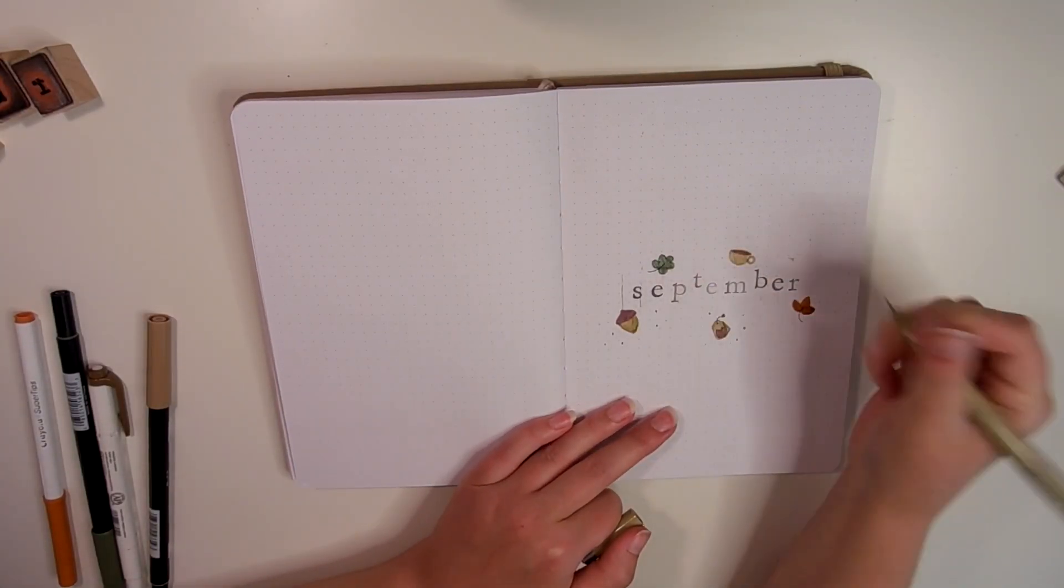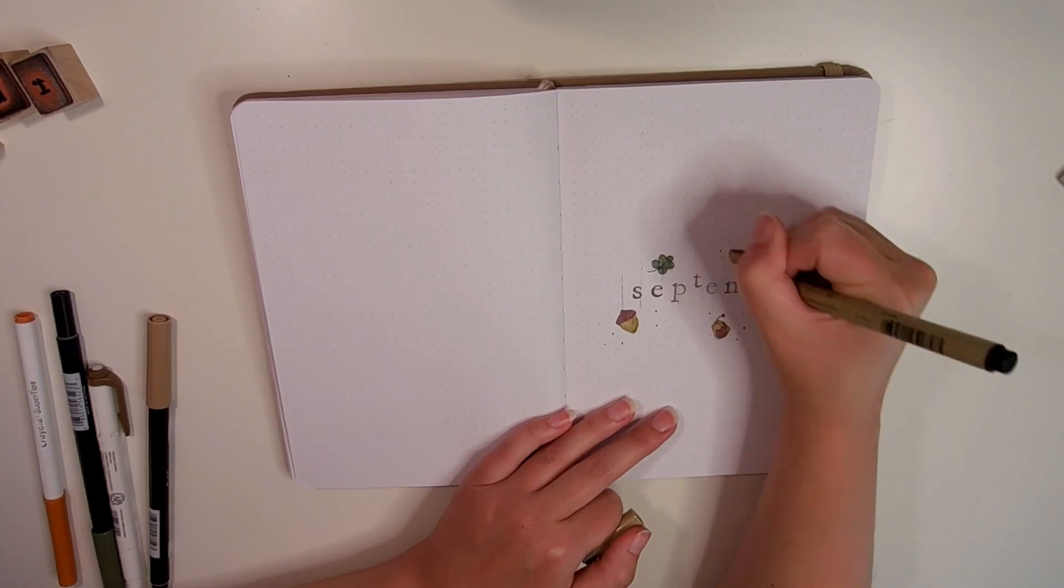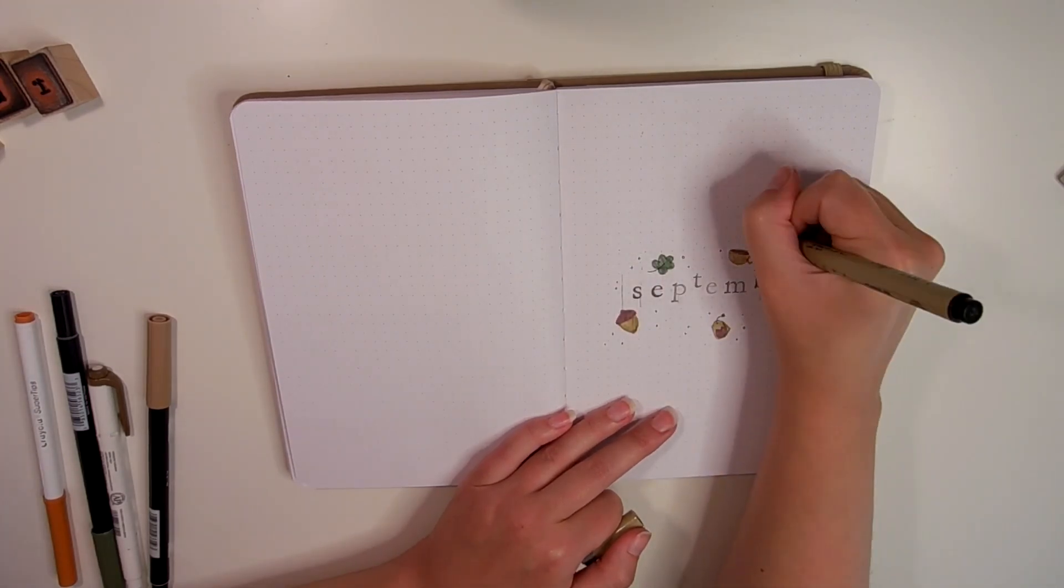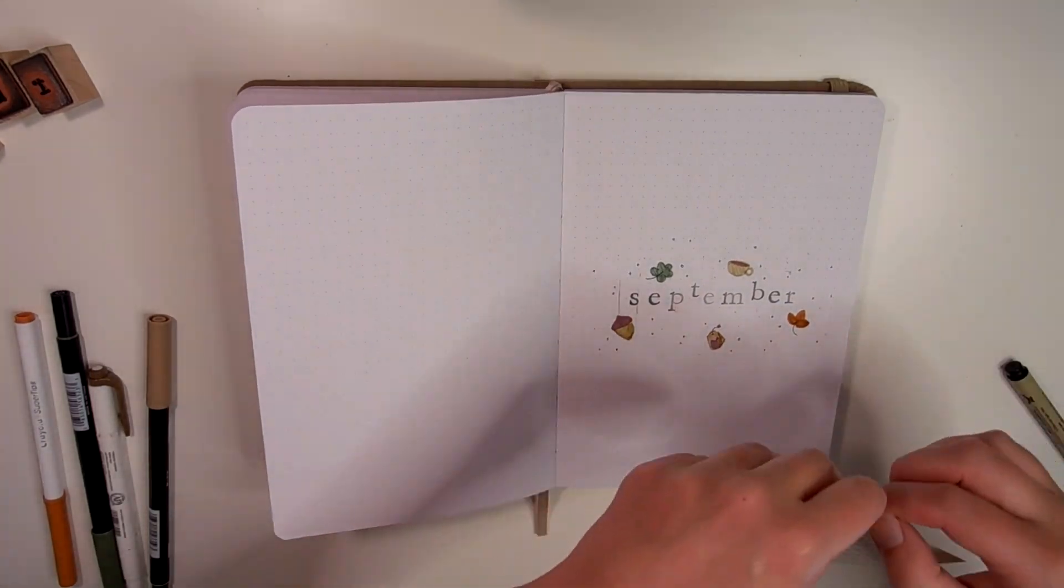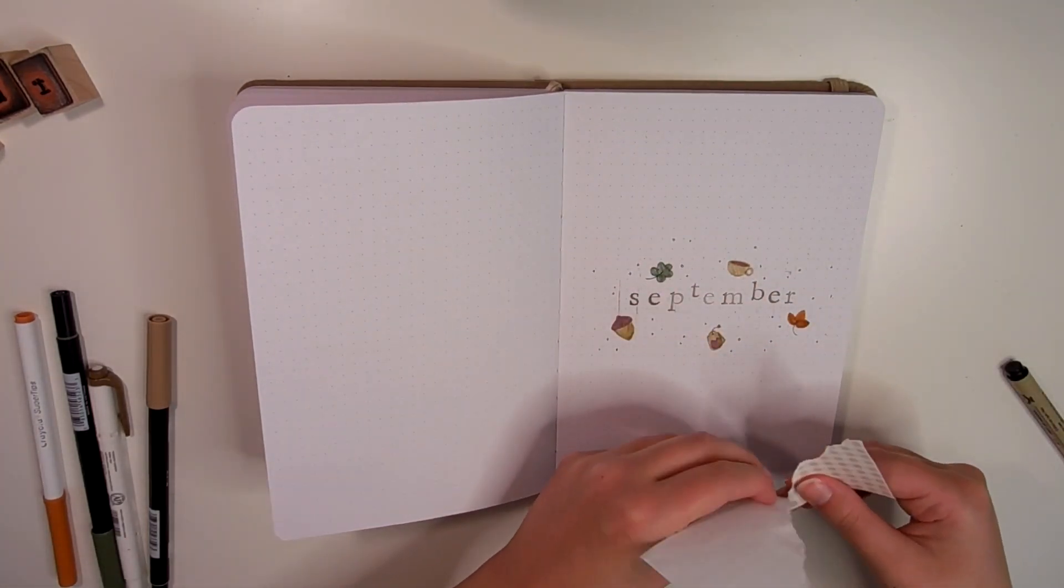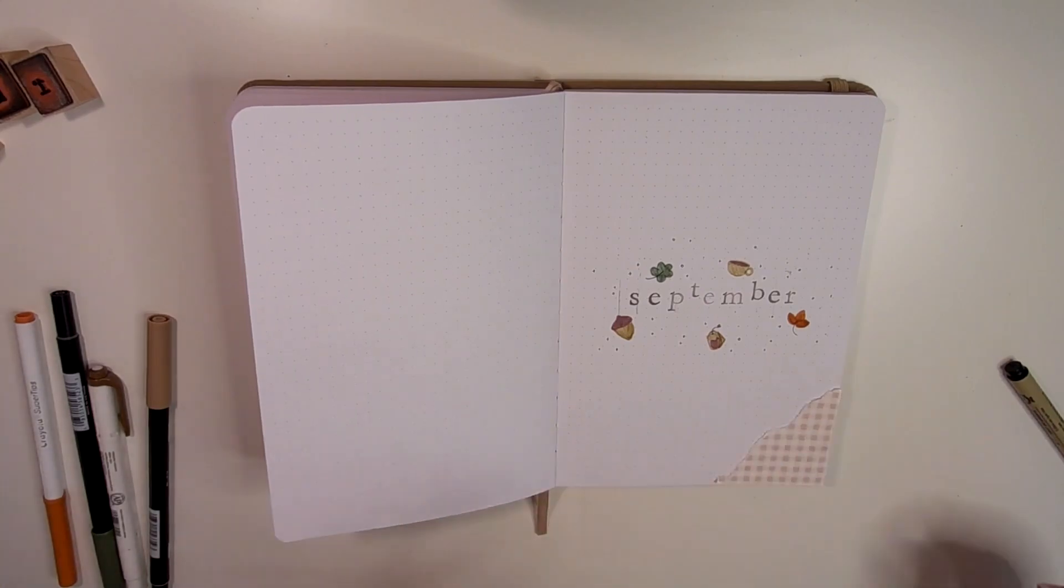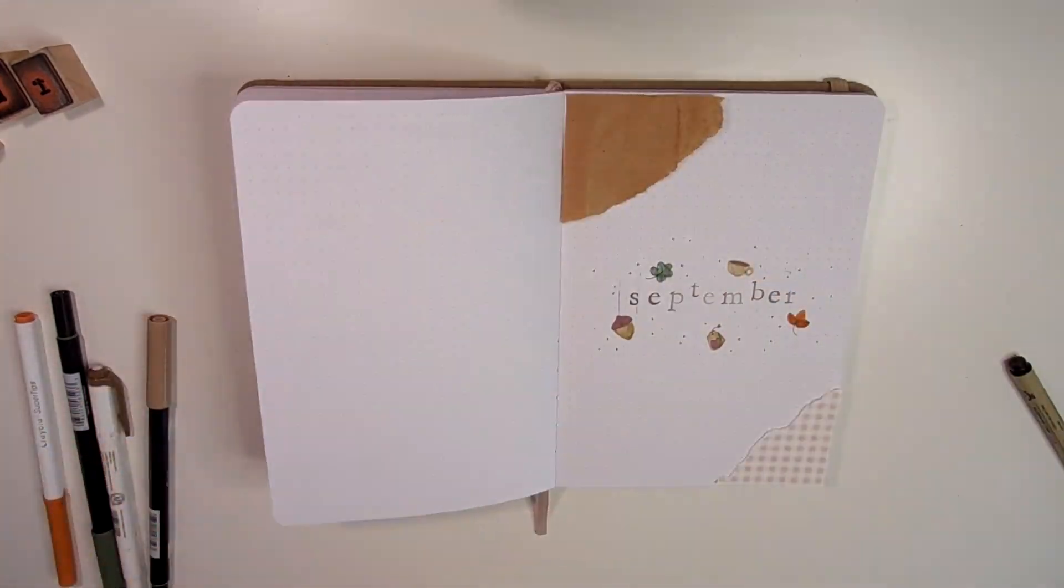I'm doing some very small fall-related doodles—a little acorn, a couple leaves, a coffee cup, and a bag of tea, just keeping it very cozy but simple. I added some little details like stars around that to fill up the empty space surrounding the September title.